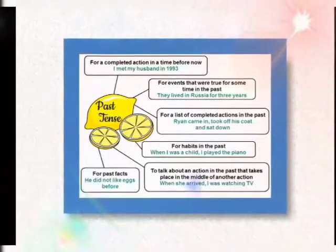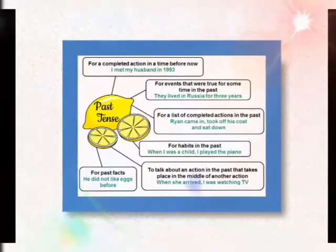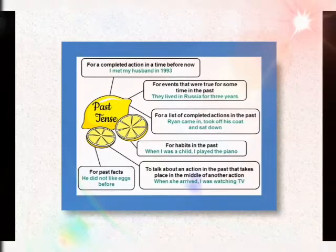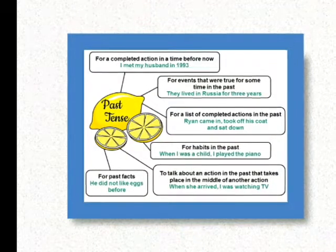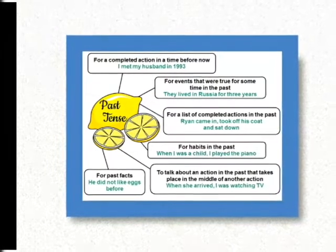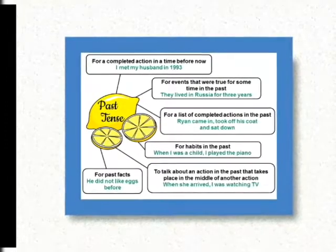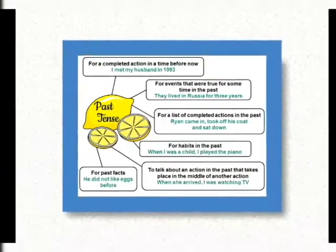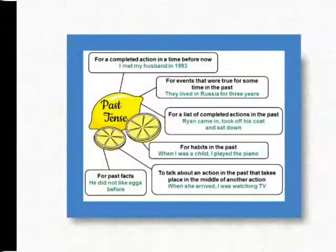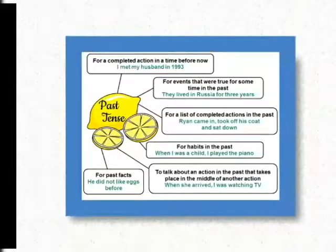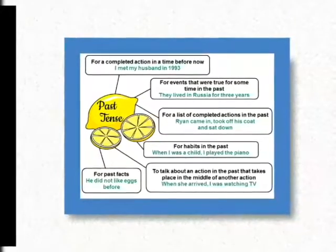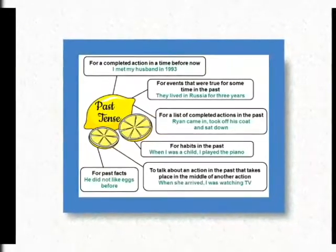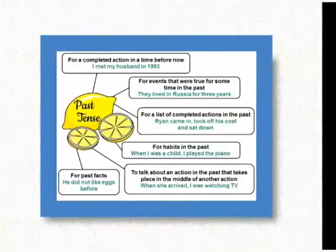So where do we use simple past tense? First, for a completed action in a time before now — 'I met my husband in 1993.' 'Met' is the second form of 'meet.' Second, for events that were true for some time in the past — 'They lived in Russia for three years.' 'Lived' is the second form of 'live.' Third, for a list of completed actions in the past.